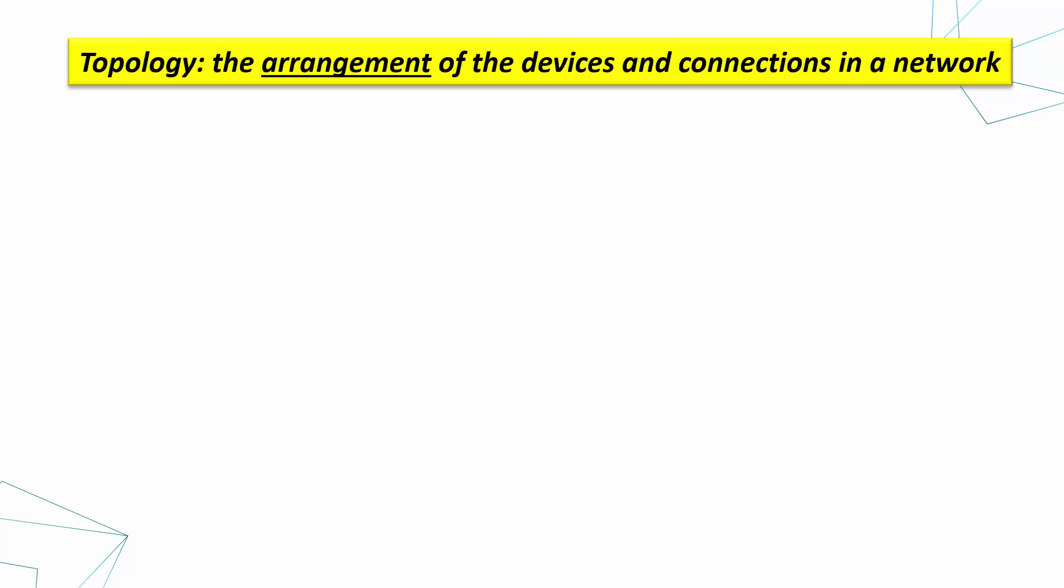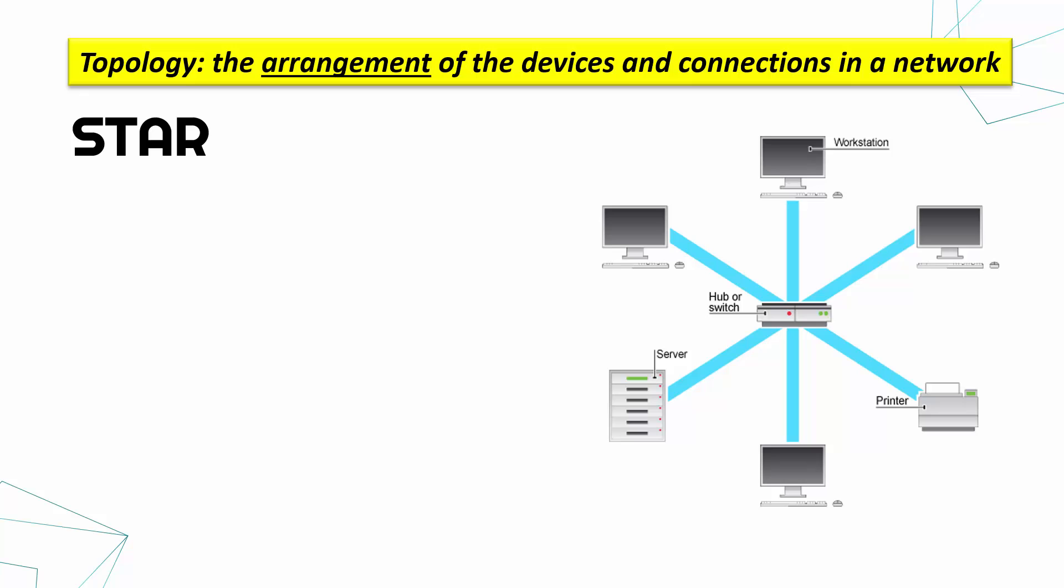First of all, the word topology is a word we don't come across very often in normal English. In networking, this word refers to the arrangement of the devices and connections in a network. How are we actually physically arranging and sometimes logically arranging these devices? We've covered different types of networks before, things like client-server, peer-to-peer, but this is about how you actually are laying out the network in reality.